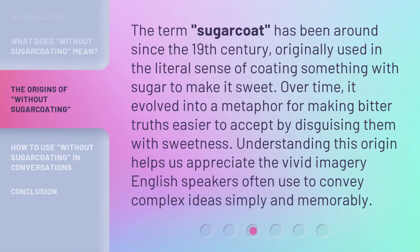The term sugarcoat has been around since the 19th century, originally used in the literal sense of coating something with sugar to make it sweet. Over time, it evolved into a metaphor for making bitter truths easier to accept by disguising them with sweetness. Understanding this origin helps us appreciate the vivid imagery English speakers often use to convey complex ideas simply and memorably.